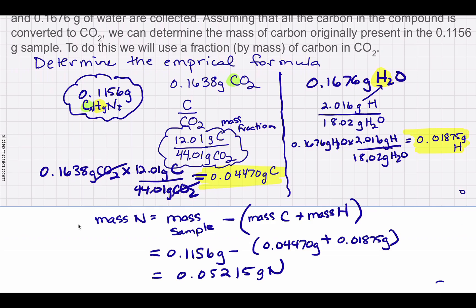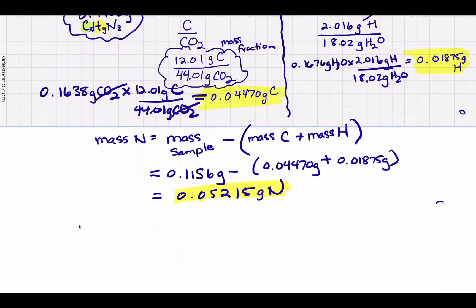The only new part in this type of problem was that mass fraction. Now that we have the mass of all three elements in the compound, it becomes a straightforward empirical formula problem — convert each mass to moles and divide by the smallest number of moles to get whole number subscripts. You could pause and do it on your own and then check.